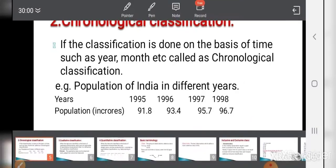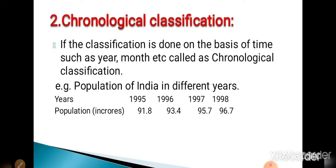Now the next is chronological classification. If the classification is done on the basis of time, such as year or month, it is called chronological classification. For example, population of India in different years. The given data classification is done on the basis of years, so it is called chronological classification.